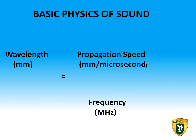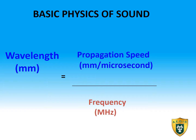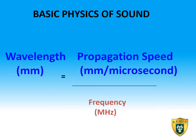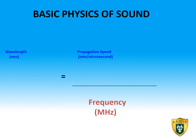This also can be viewed in the form of an equation. If the frequency is held constant, the wavelength and propagation speed will increase and decrease in relation to each other.